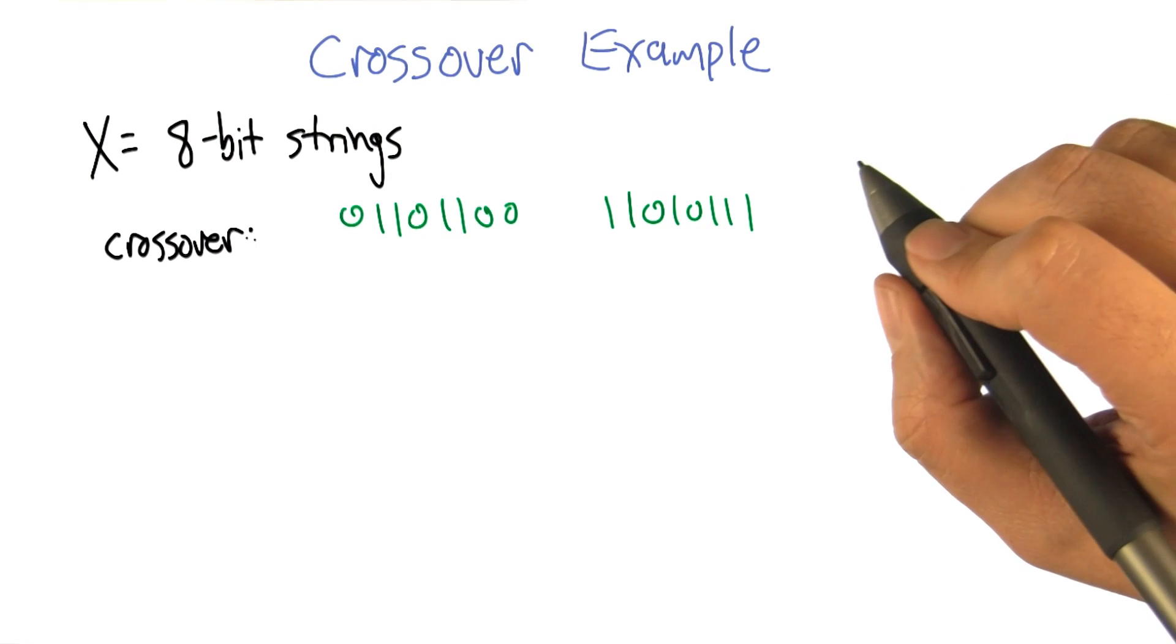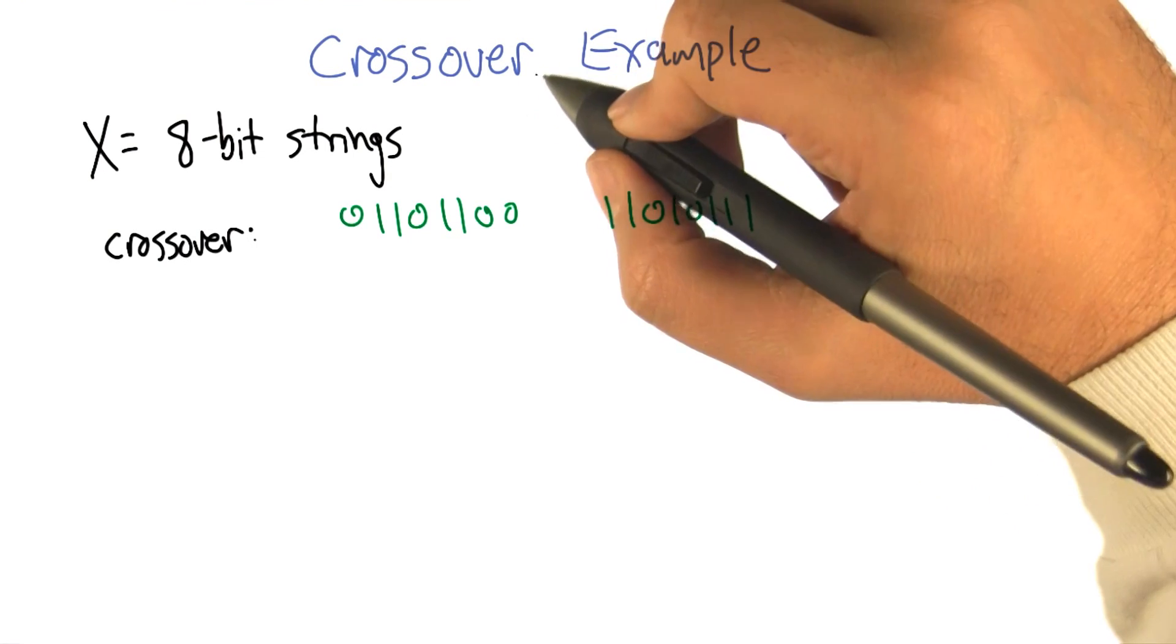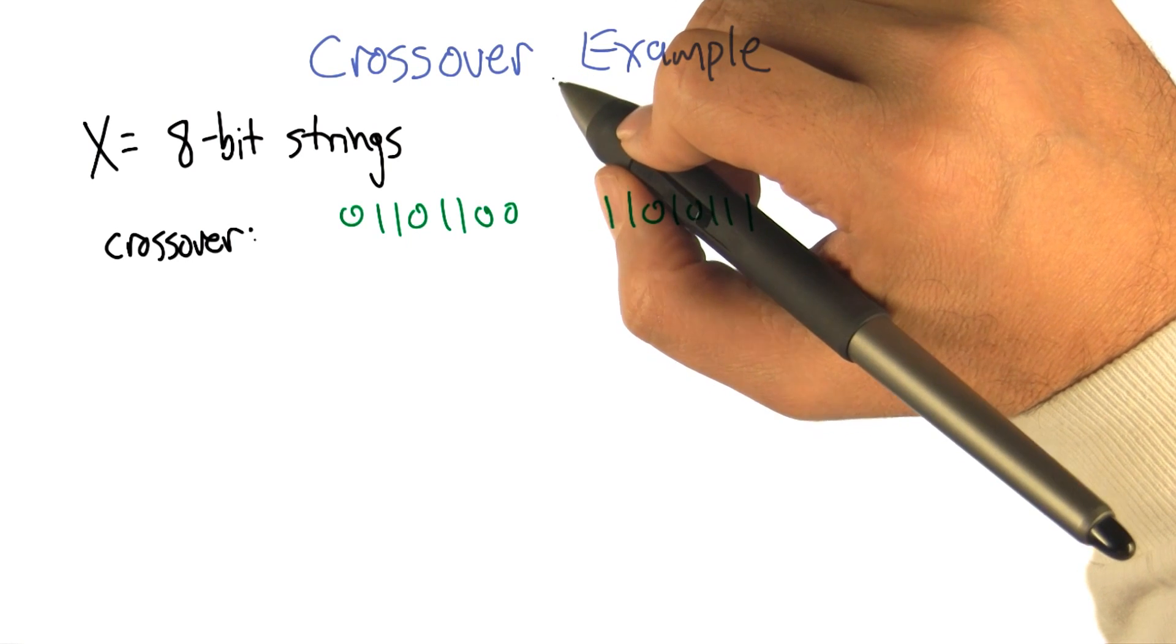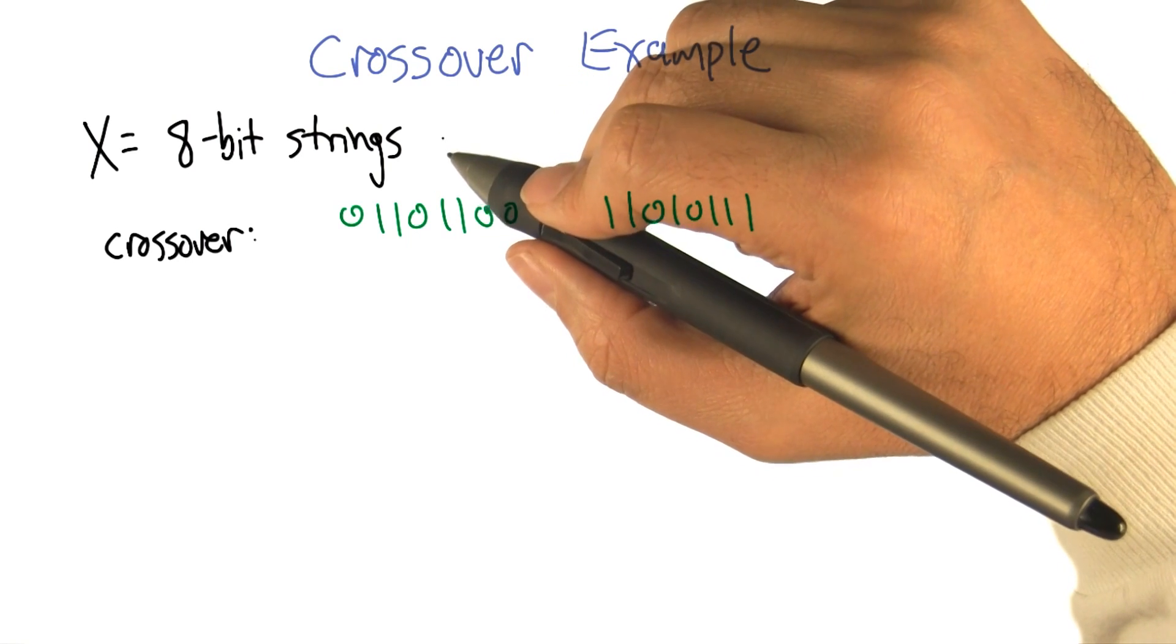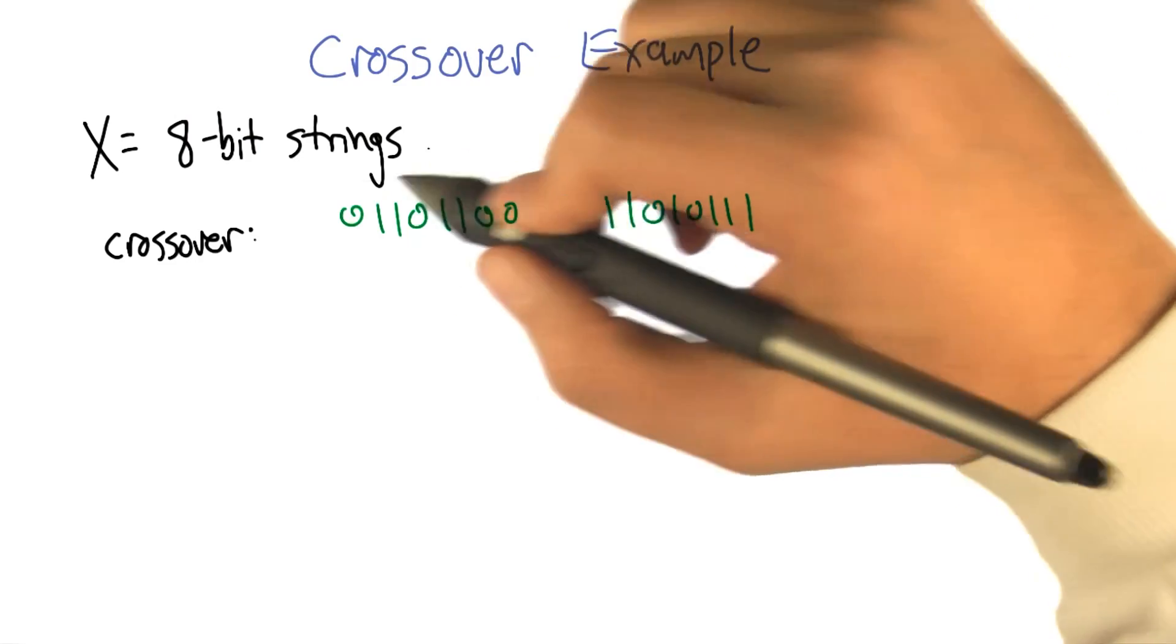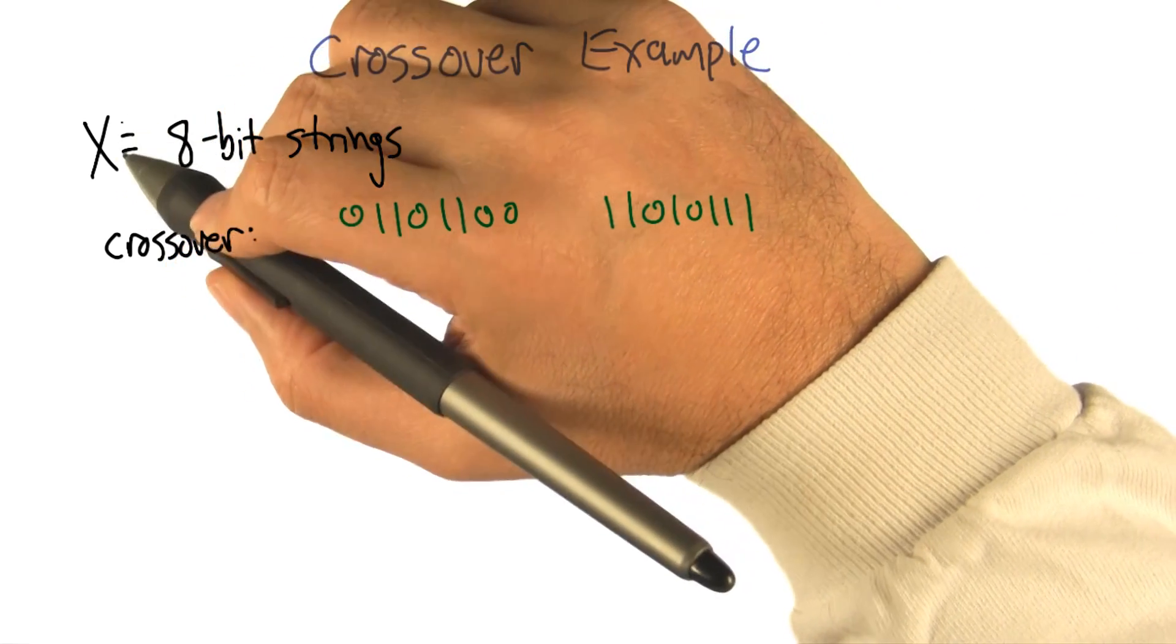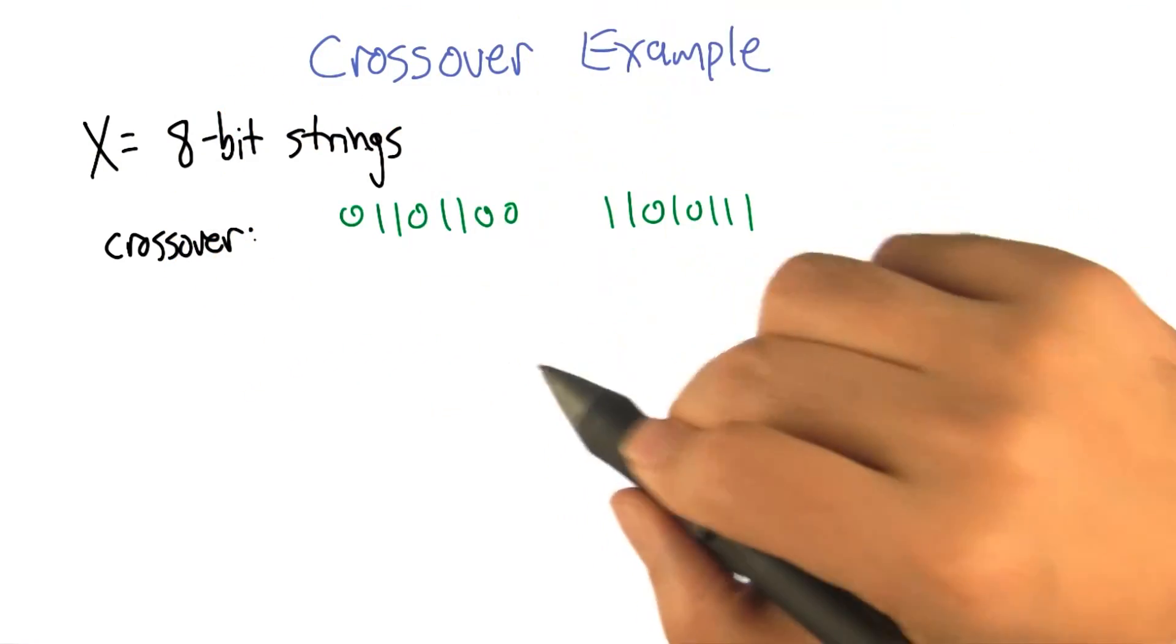So let's do a concrete example of crossover. It turns out that the crossover operation is always going to depend critically on how you represent the input space. So let's say, concretely, that our input space is 8-bit strings.